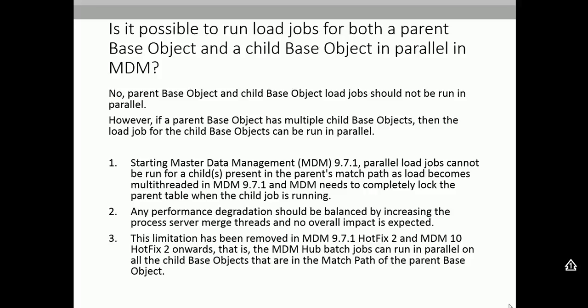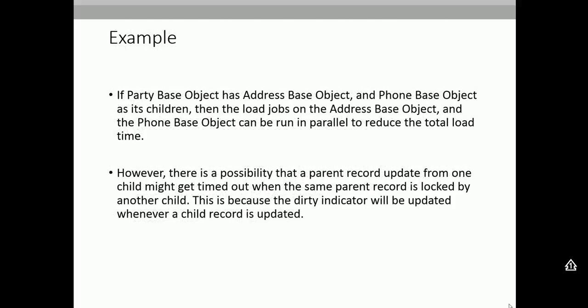Now MDM hub batch jobs can run in parallel on all child-based objects that are in the match path of the parent-based object. So if you have party as the parent, with party address and party identity as children, and both are present as a match path in the base object party, then both party address and party identity can be processed in parallel.